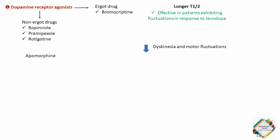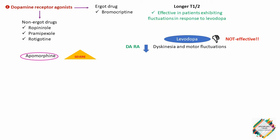Bromocriptine, pramipexole and ropinirole are effective in patients with Parkinson's disease complicated by motor fluctuations and dyskinesias. However, these drugs are ineffective in patients who have not responded to levodopa. Apomorphine is an injectable dopamine agonist used in severe and advanced stages of the disease to supplement the oral medications. Side effects severely limit the utility of the dopamine agonists.